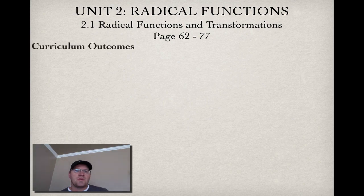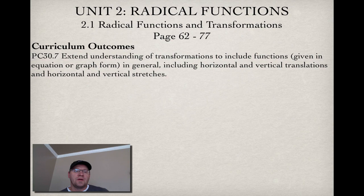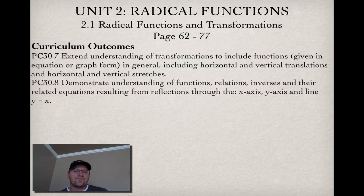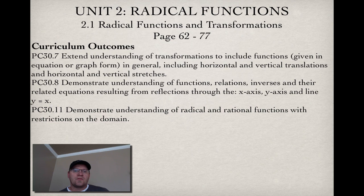Now we have three curriculum outcomes that we'll cover. Some that you've seen before, 30.7, which are the main parts we're talking about: horizontal and vertical translations and horizontal and vertical stretches. 30.8 you've seen before, talking mostly about reflections in the x and y axis. And the new one is 30.11, where we're going to demonstrate understanding of radical and rational functions with restrictions on the domain.